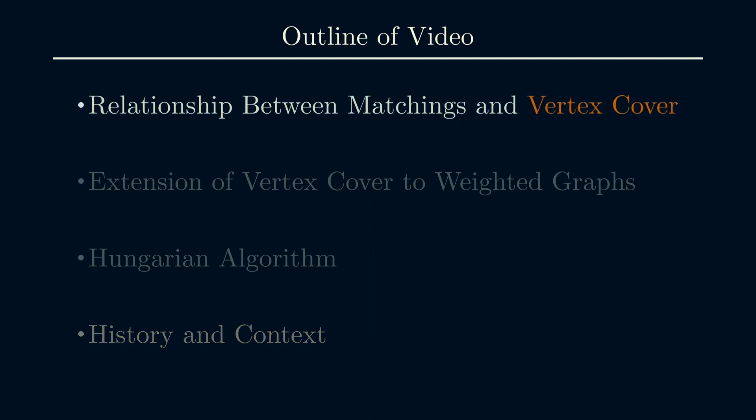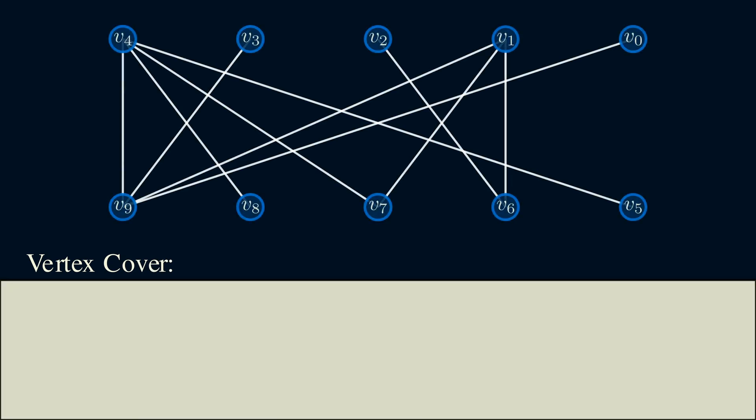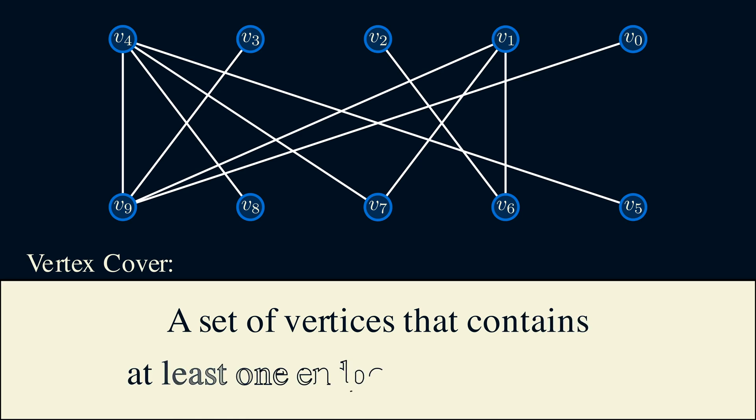Okay, let's start with the first item, vertex covers. A vertex cover is kind of like the opposite of a matching. A set of vertices is a vertex cover if it contains at least one endpoint of every edge. If we take just vertex one, these three edges have an endpoint at vertex one. And if we take vertices seven and nine, they cover these yellow edges. This set of six vertices covers all of the edges in the graph, so this is a vertex cover.